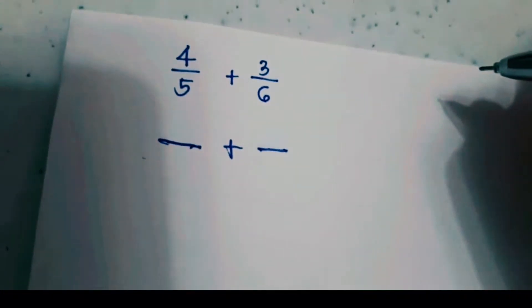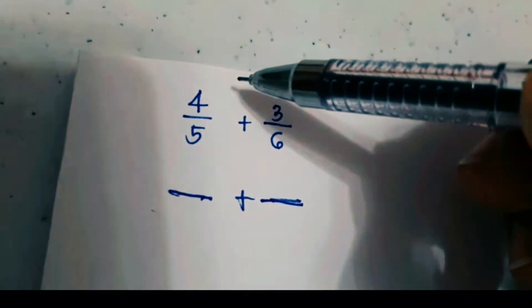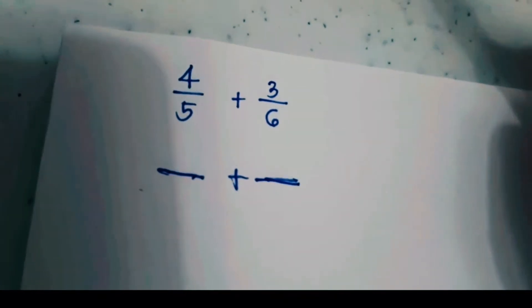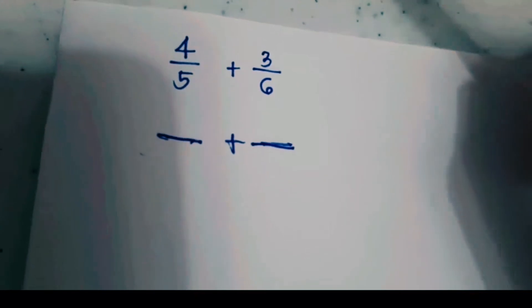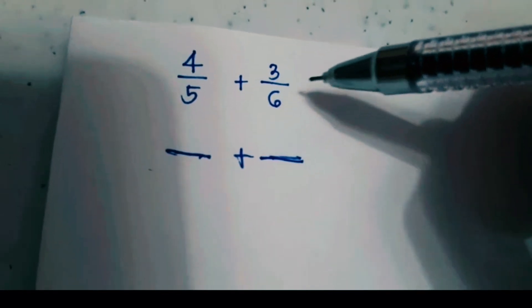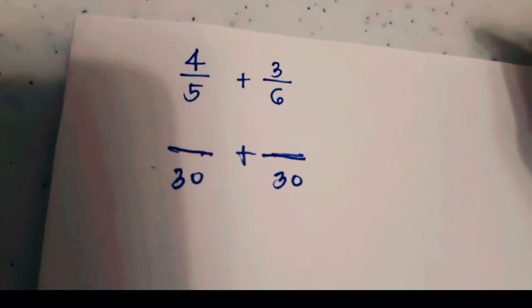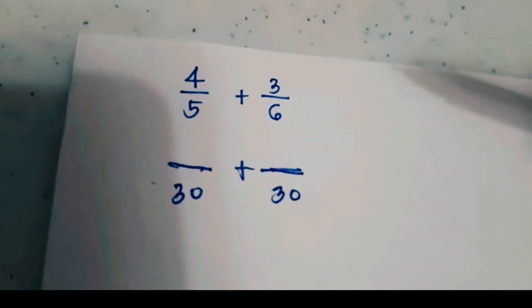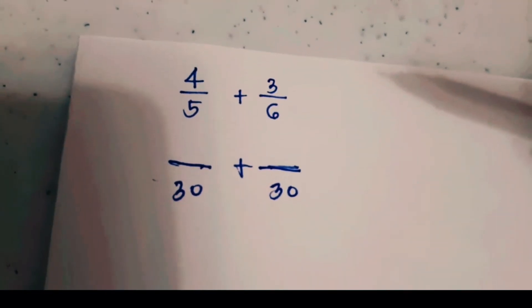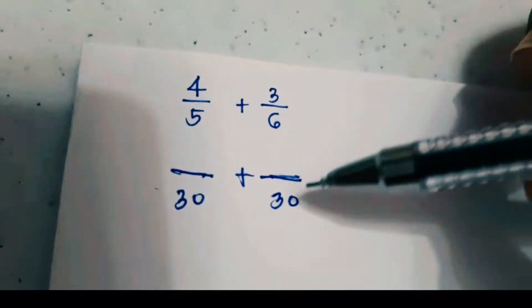To find the LCD, think of a product of five which is also a product of six. There are many multiples of five that are also multiples of six, but we want the least one, and that is 30. If you cannot do the mental math, you may skip count by five: 5, 10, 15, 20, 25, 30; then skip count by six: 6, 12, 18, 24, 30. So 30 is a product of five and at the same time a product of six.